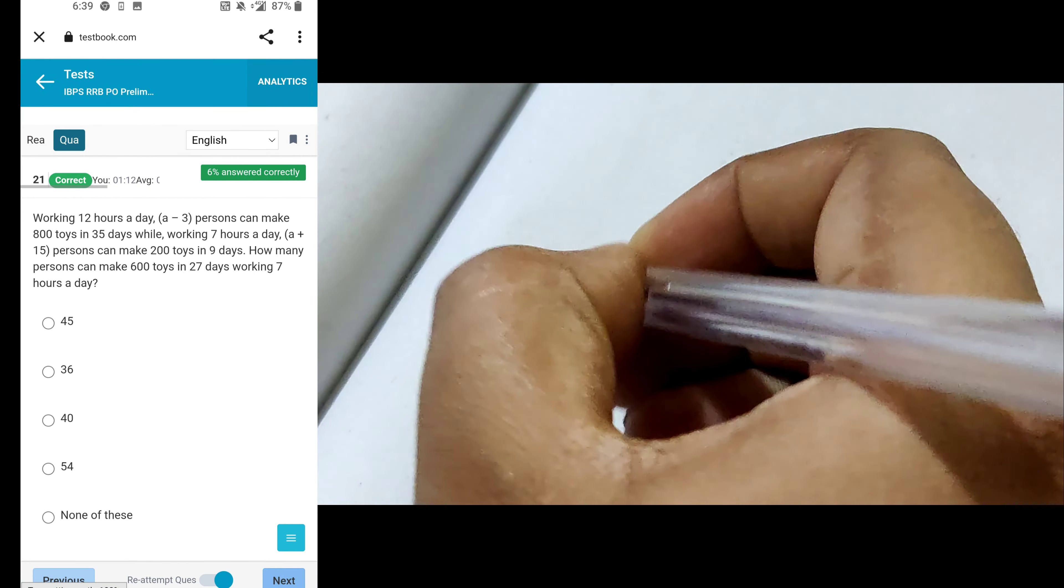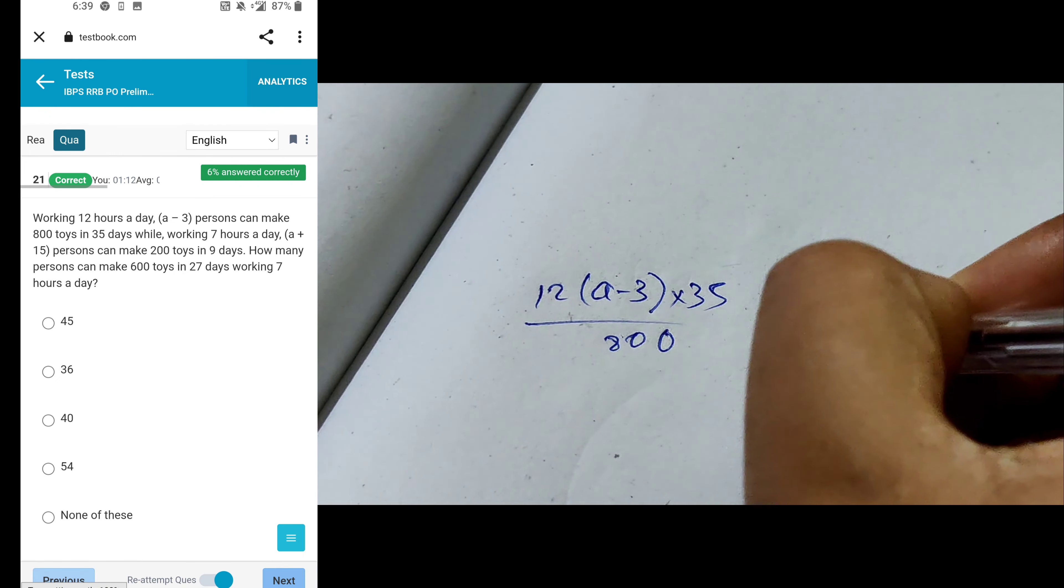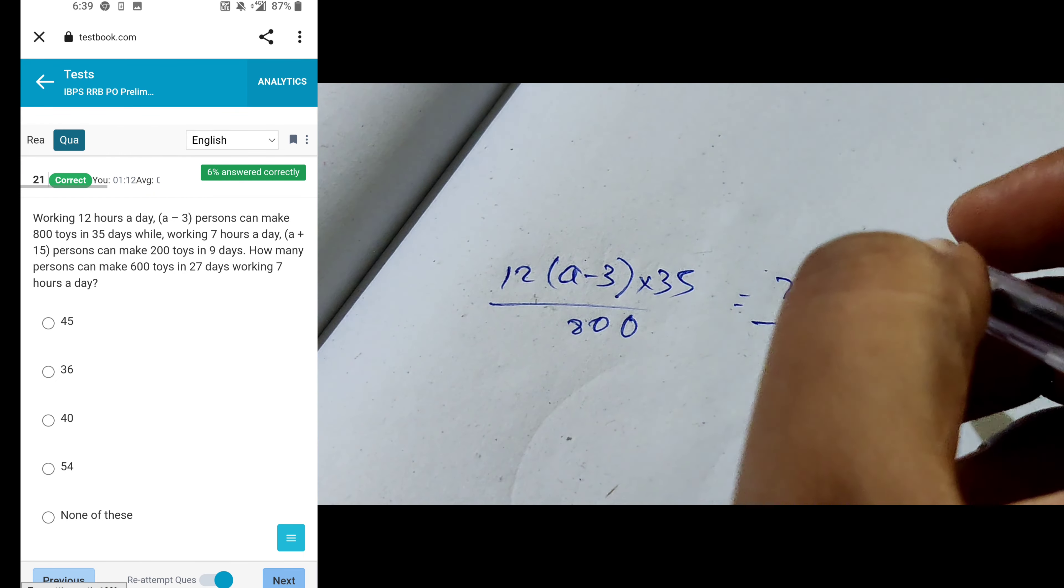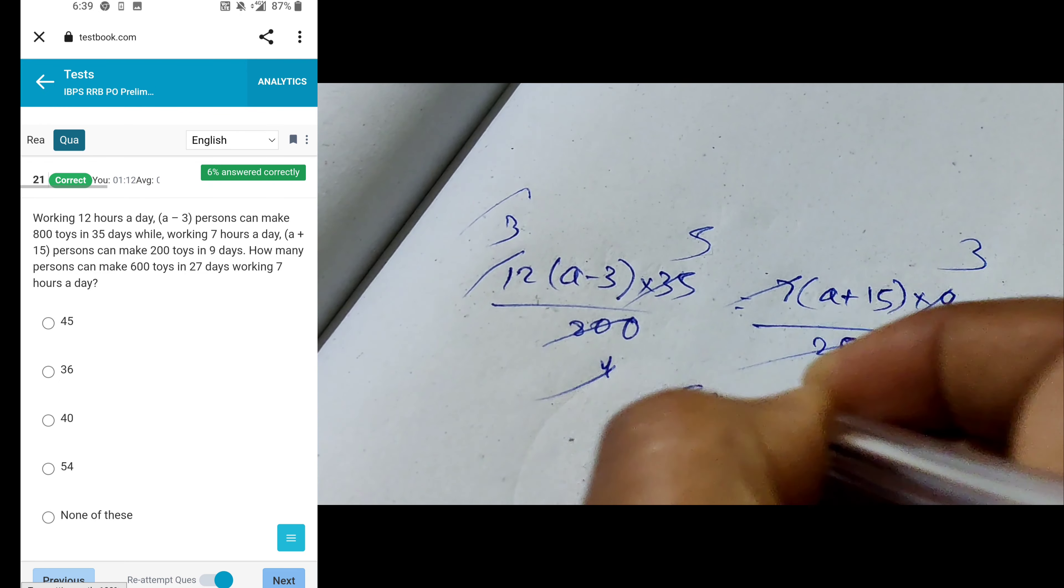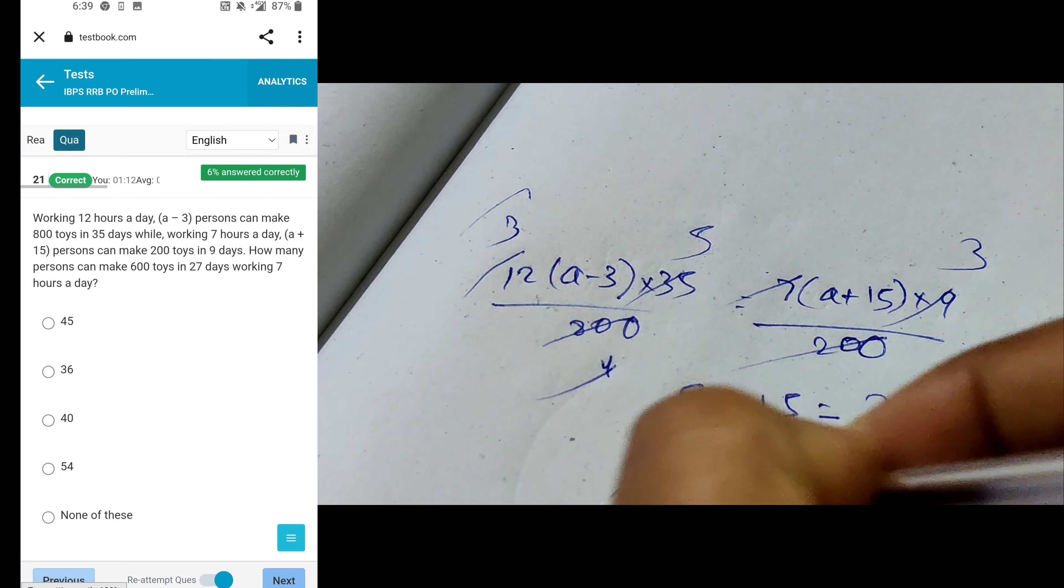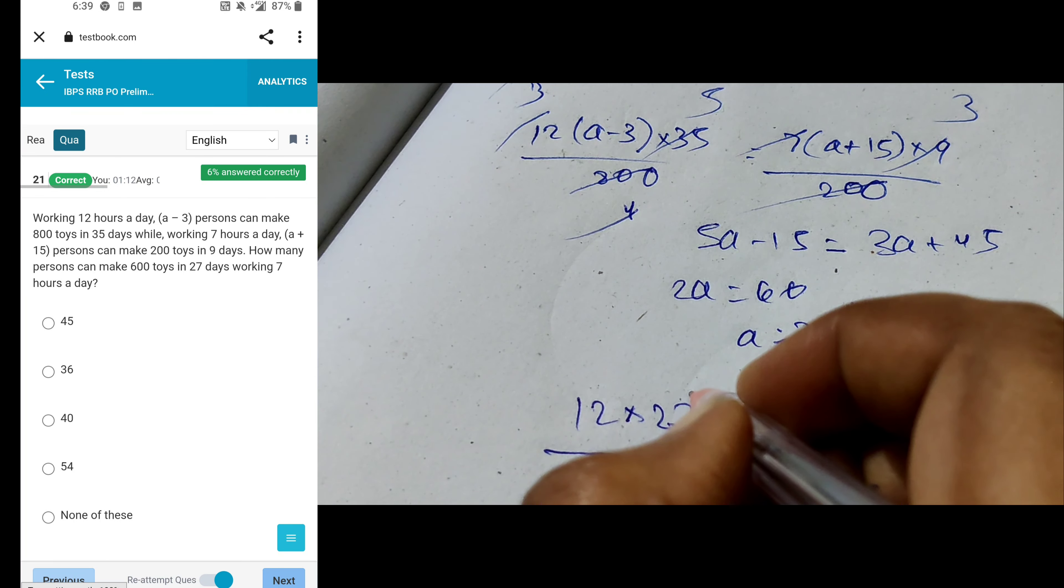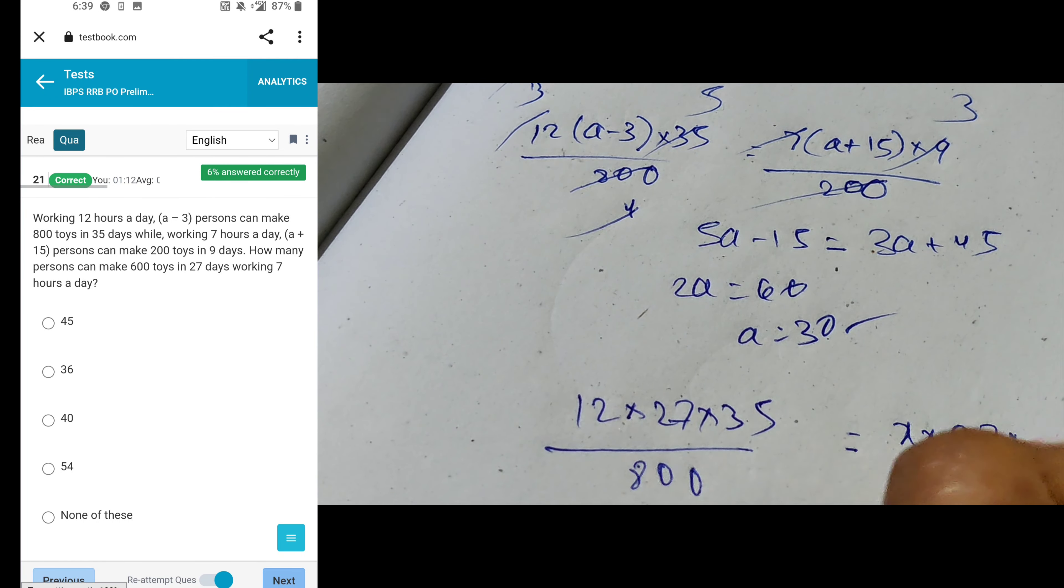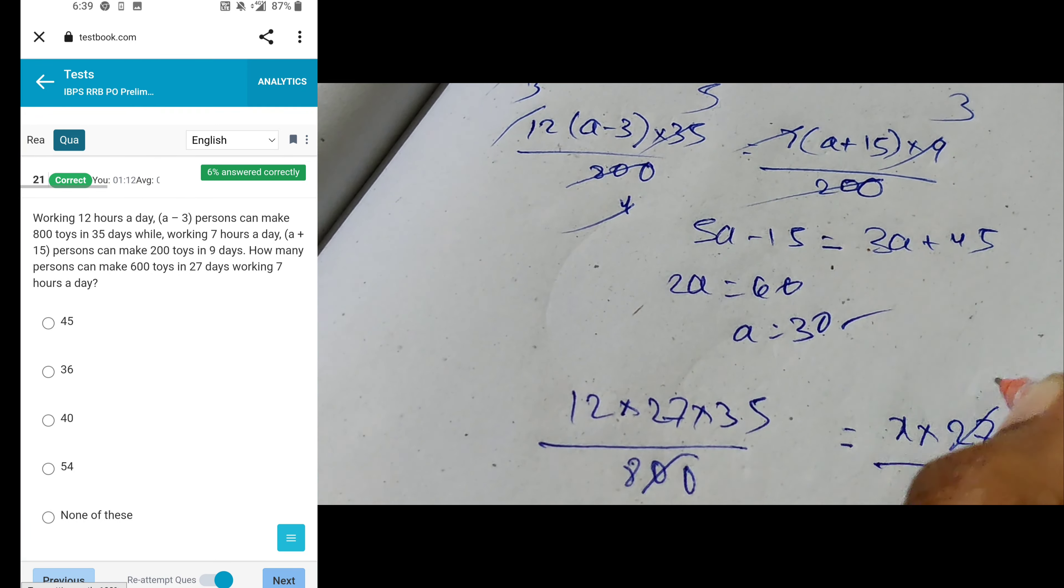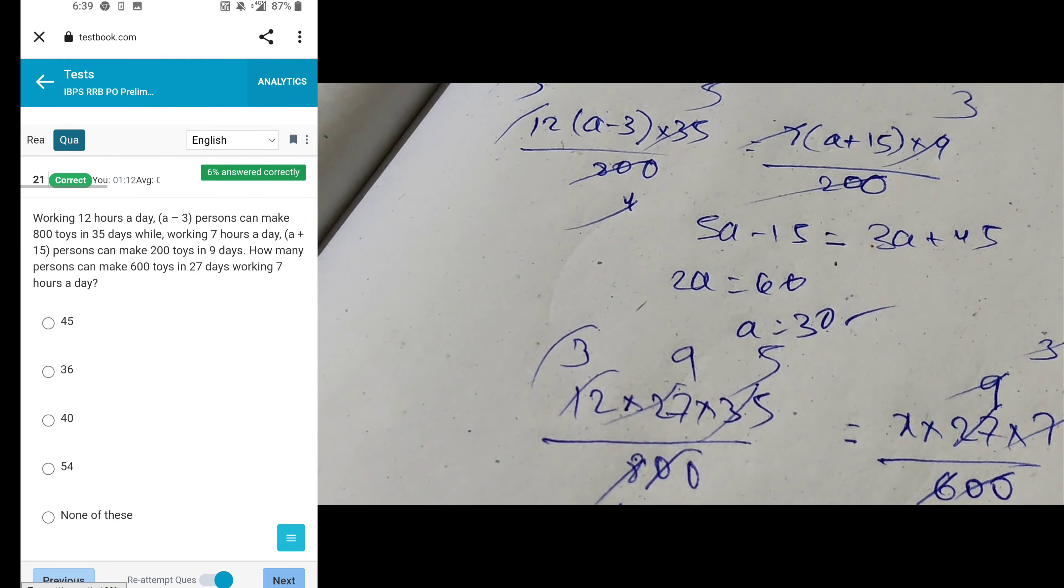Next, working 12 hours a day, A minus 3 persons make 800 toys. And working 7 plus 15 persons make 200 toys. Find the A value. So here 4 times 3, 5, 3 again, so 5A minus 15 equals 3A plus 45, so 2A equals 60, A equals 30. We'll substitute A value in any equation: 27 times 35, 800 equals x times 27 times 7 by 600. So 2, 9, 4, 3, 9, so 9, that's 45.